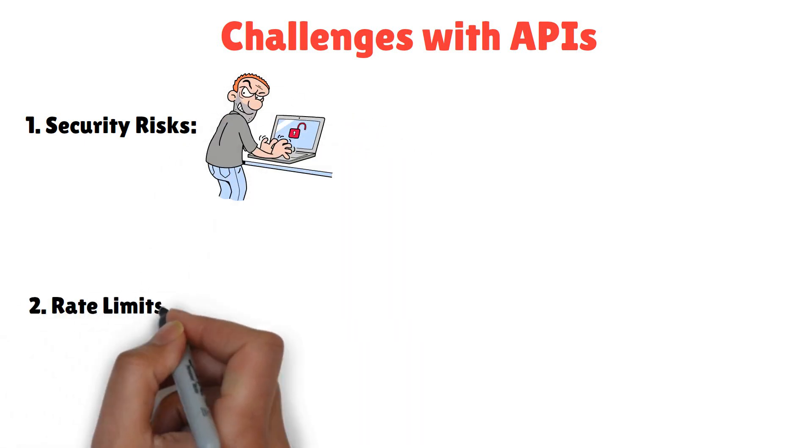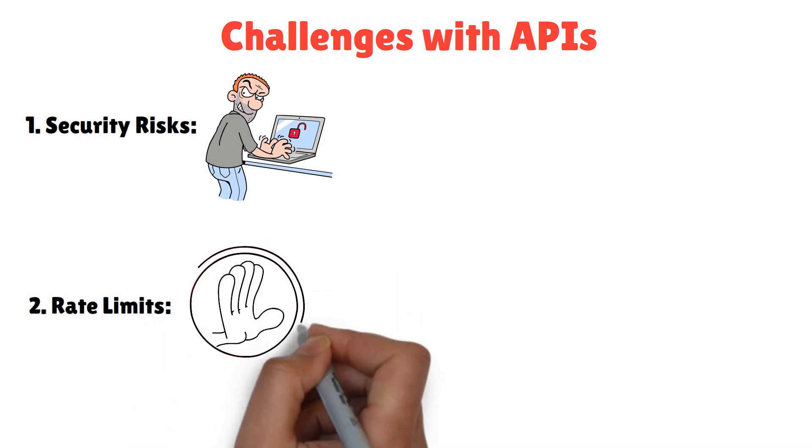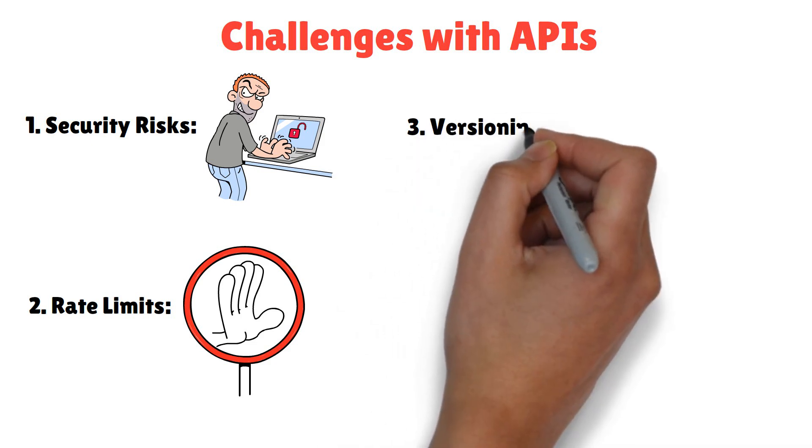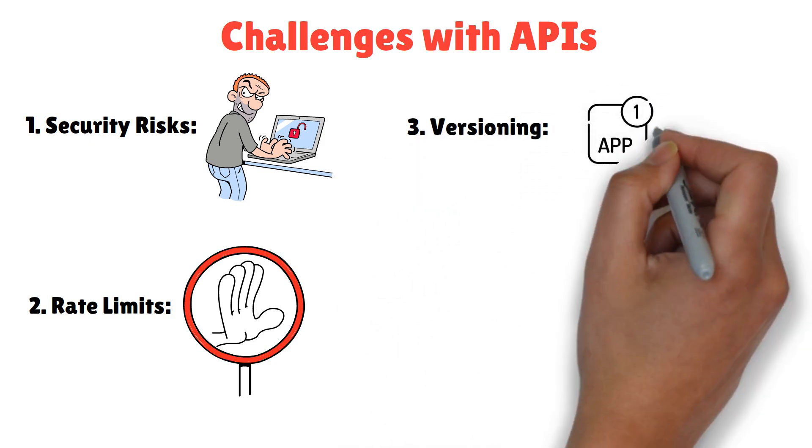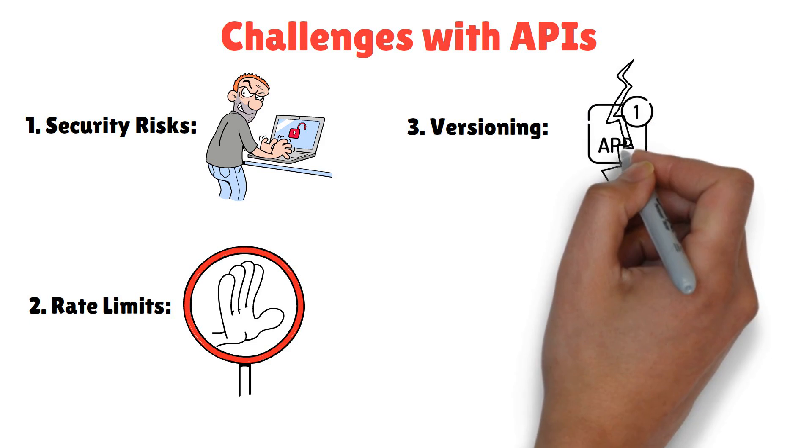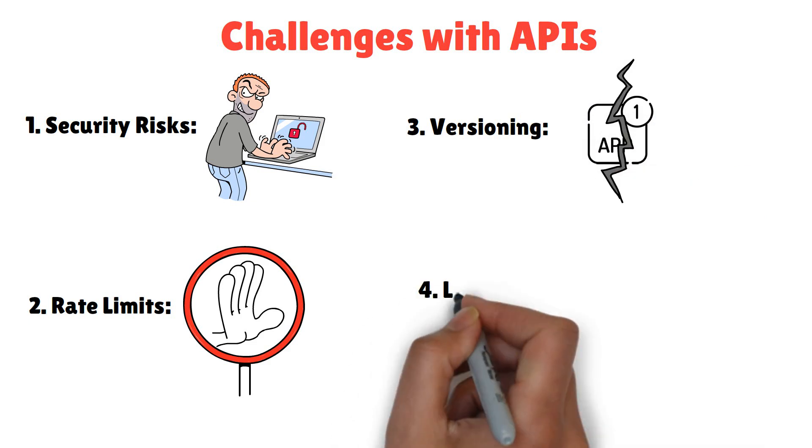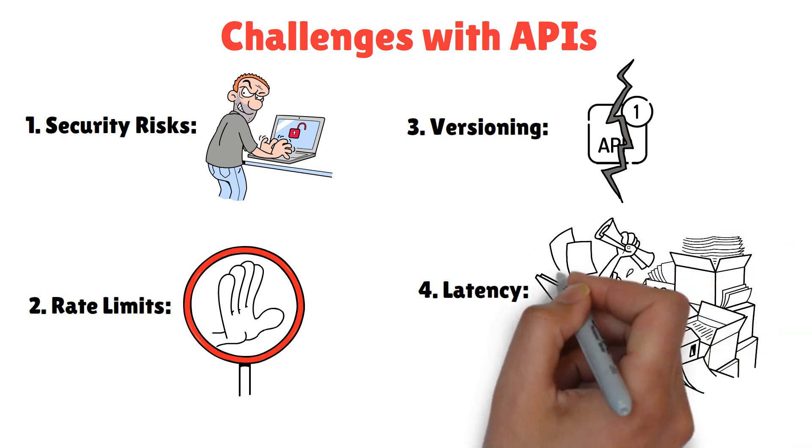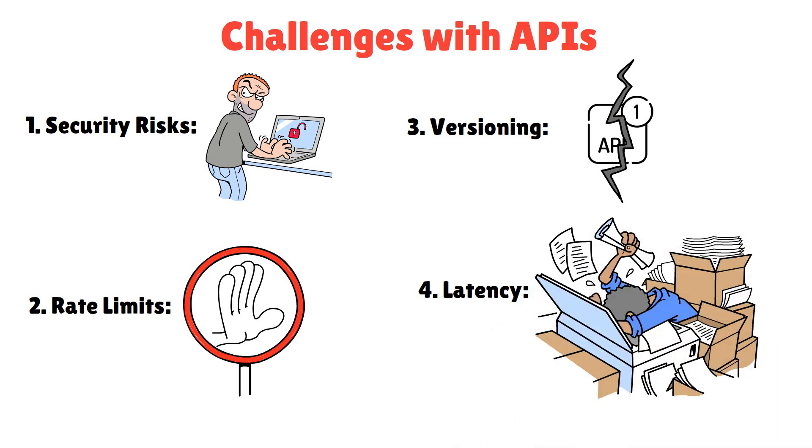Rate limits. APIs often restrict how many requests you can make in a given time. Versioning. API updates can break older applications that rely on them. Latency. A slow API response can frustrate users and disrupt app performance.